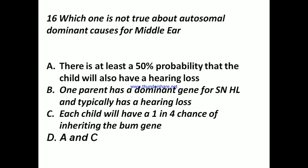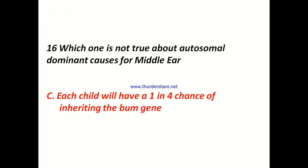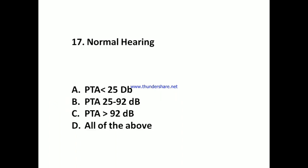Question 16: Which one is not true about autosomal dominant causes? A) For middle ear, there is at least a 50% probability that the child will also have a hearing loss. B) One parent has a dominant gene for SNHL and typically has a hearing loss. C) Each child will have a one-in-four chance of inheriting the bad gene. Answer: A and C.